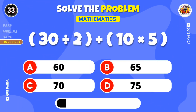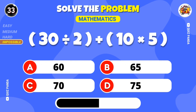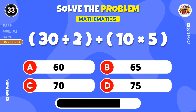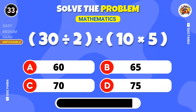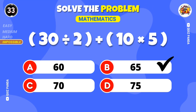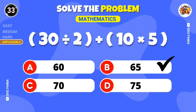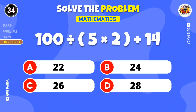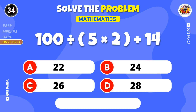30 divided by 2 plus 10 times 5. What's the result of 100 divided by 5 times 2 plus 14?